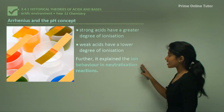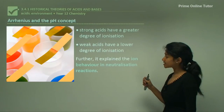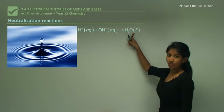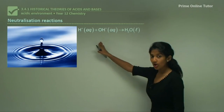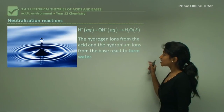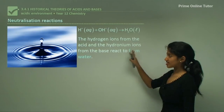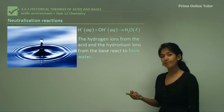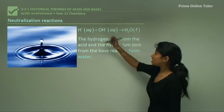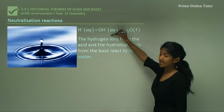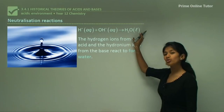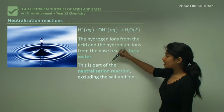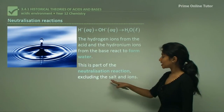Arrhenius further explained the ion behavior in neutralization reactions. Here we have hydrogen ions and hydroxide ions forming water — this is the basis of a neutralization reaction. In a neutralization reaction, which is an acid-base reaction, the hydrogen ions from the acid and the hydroxide ions from the base react to form water. Water is a product of the neutralization reaction along with the salt.